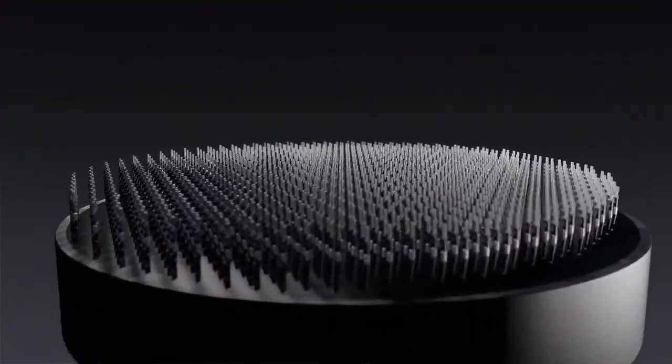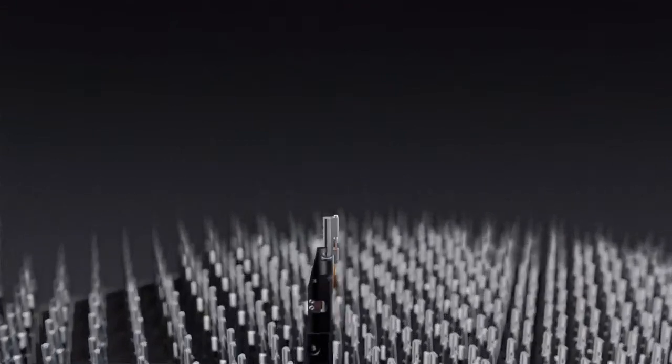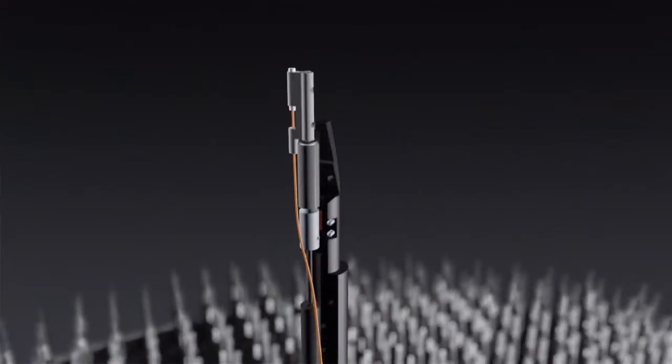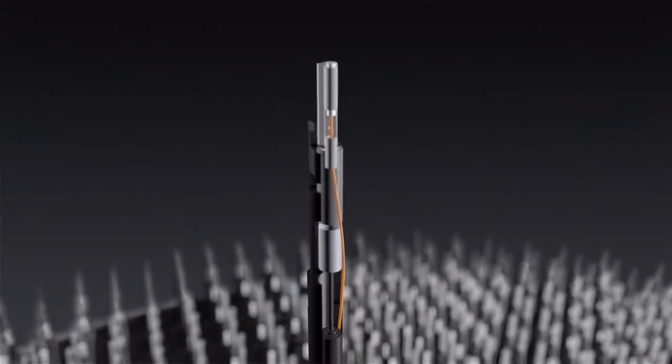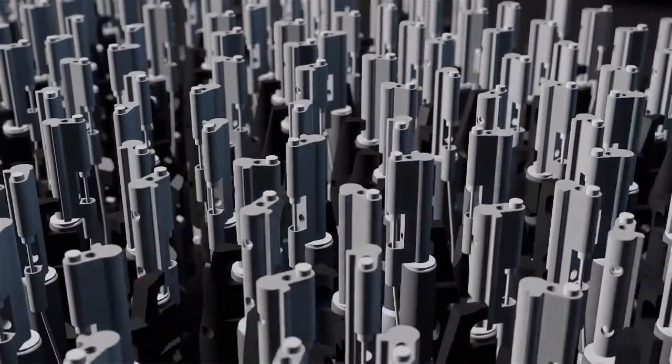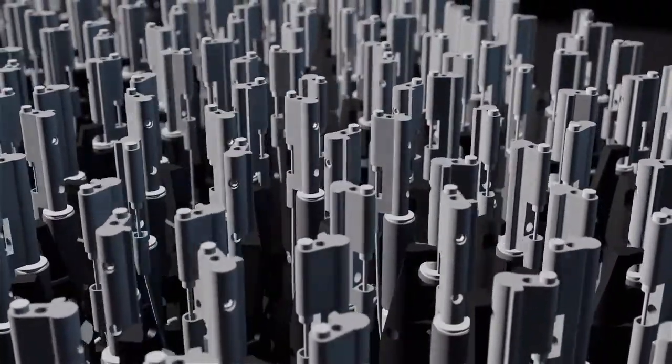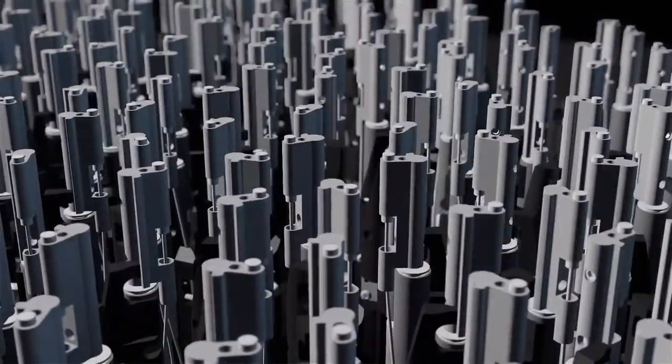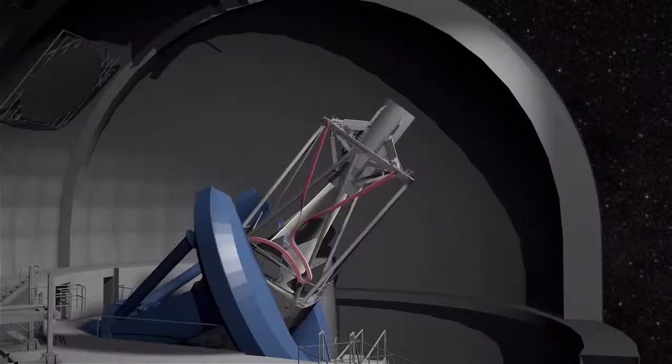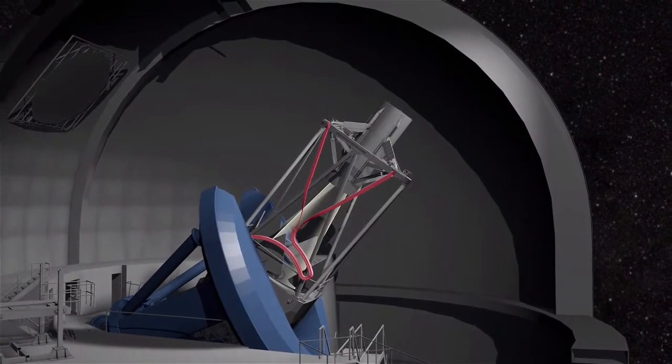5,000 robotic positioners, each carrying a single optical fiber, are programmed to move to pre-selected sequences of galaxy targets. This automated dance of robots allows DESI to target sequences of thousands of galaxies at a time.